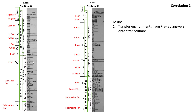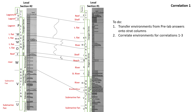The first thing you're going to do is write in all the environments — you're just transferring this over from your pre-lab. In this lab we're really going to correlate environments for all three correlations. Starting from the bottom using superposition, you can see that in location 2 there's a submarine fan all the way up through layer V, and in location 1 that submarine fan is present until layer Y. So we correlate across those submarine fans, connecting them. I give you the answers to this correlation so compare your work to it.